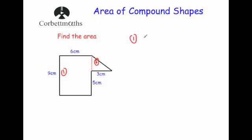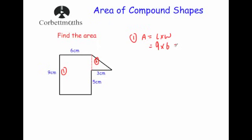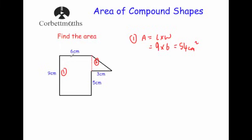For the rectangle, area equals length times width. The length is 9 and the width is 6, so that's 9 times 6, which equals 54 centimeters squared.